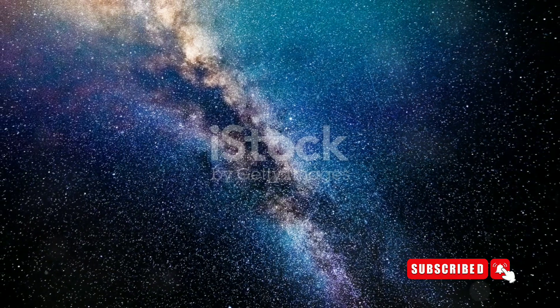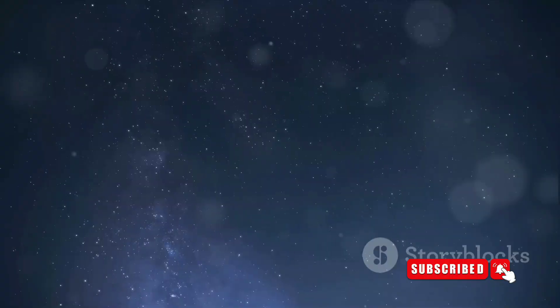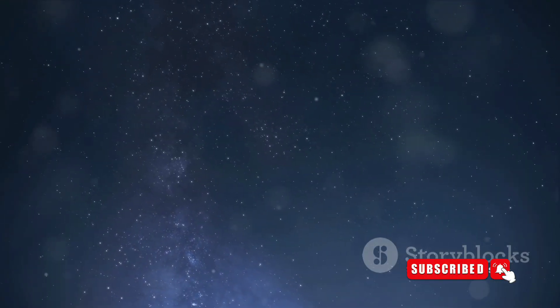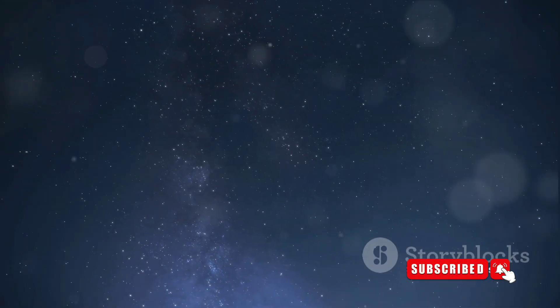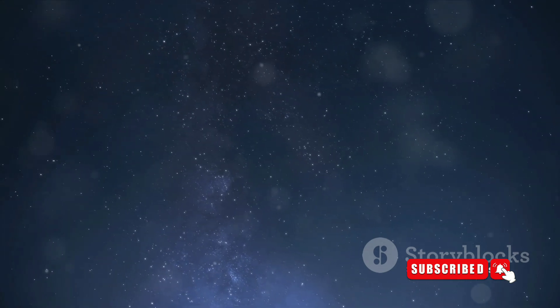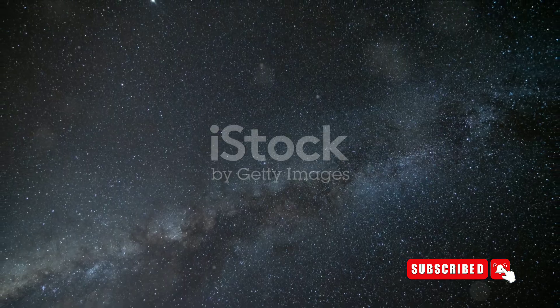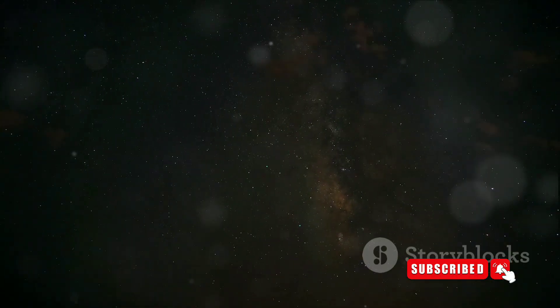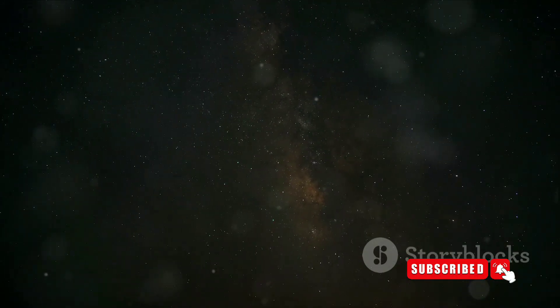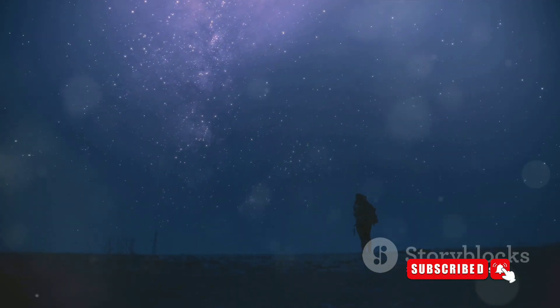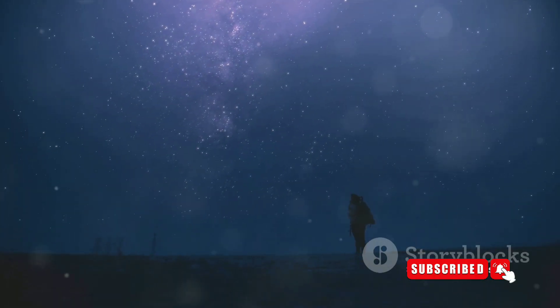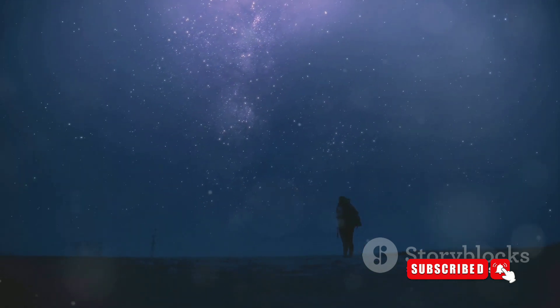Now, you might be curious as to why our galaxy is named after a dairy product. The name Milky Way has a fascinating origin. It hails from ancient Greece, where they called our galaxy Galaxias Kyklos, which translates to Milky Circle. This term was inspired by the appearance of a milky band of light in the night sky. To them, it looked as though someone had spilled a circle of milk across the heavens. In Greek mythology, the Milky Way was created when the goddess Hera spilled her breast milk while nursing Heracles.